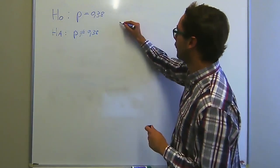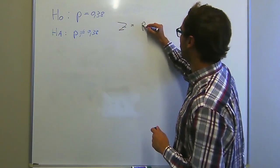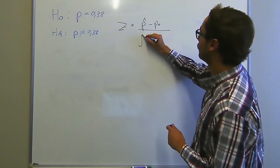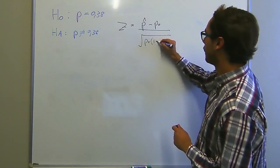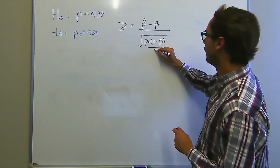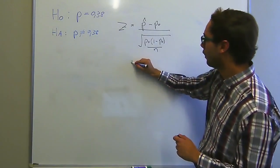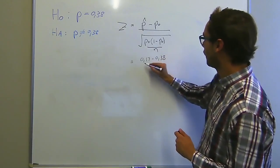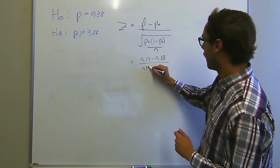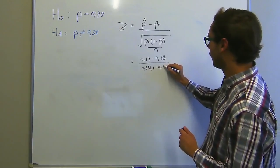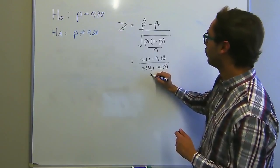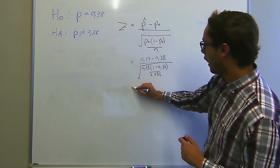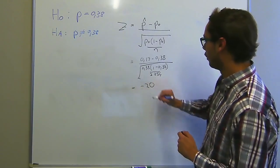Now we apply the test statistic Z. Z in this case is equal to our P observed minus P₀ over the root of P₀ times 1 minus P₀ over N. If we substitute the values, we see that this is 0.17 minus 0.38 over the square root of 0.38 times 1 minus 0.38 over our 2,254. When we work that out, we get minus 20.